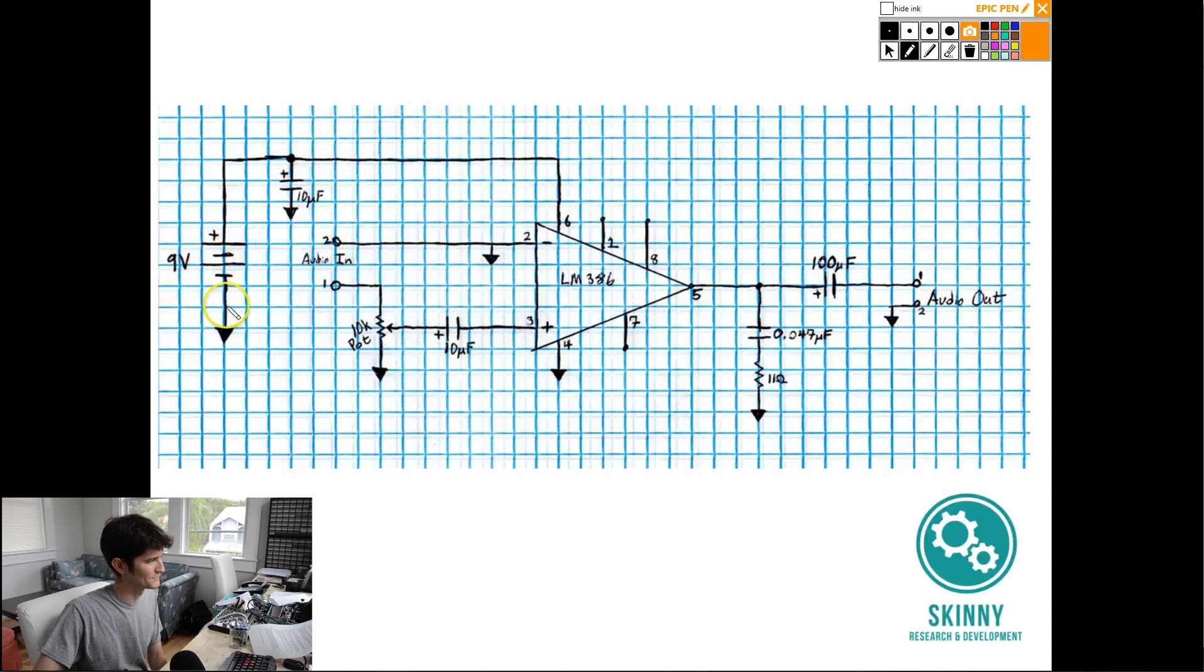The first component over here to the left is just the battery. We don't have to worry much about that, but just know that the battery is a DC voltage source. We're going to be getting direct current out of this battery and powering up our LM386 over here.